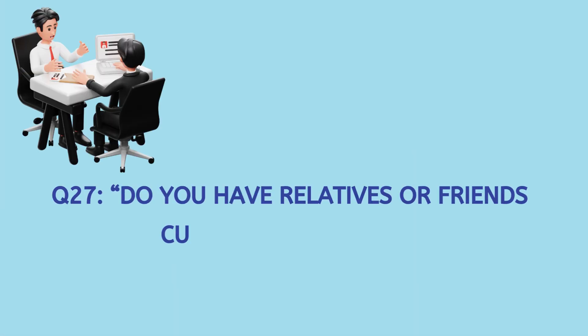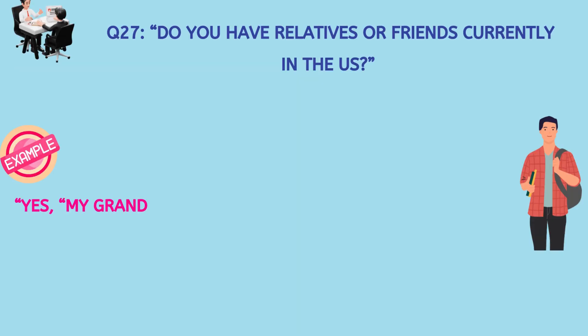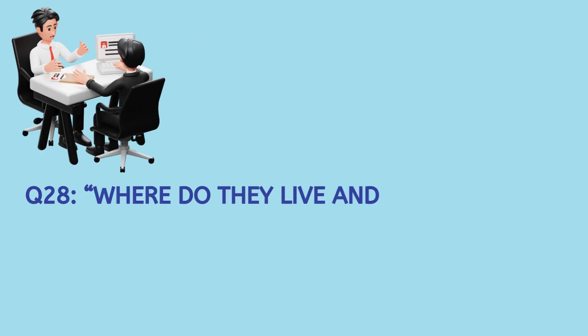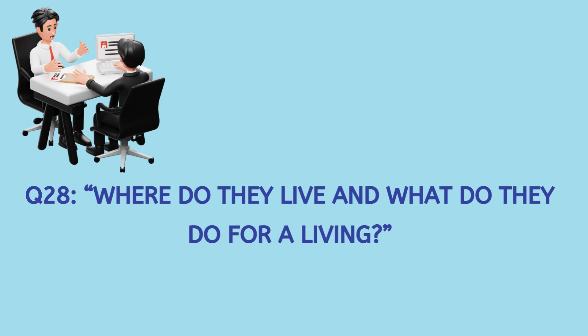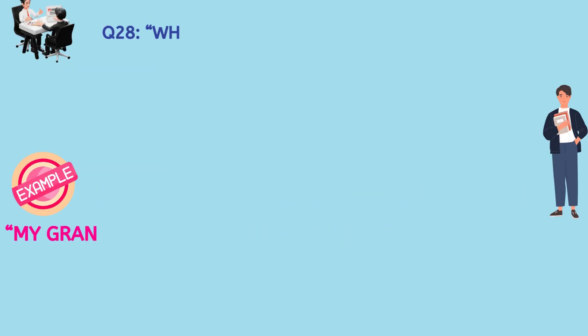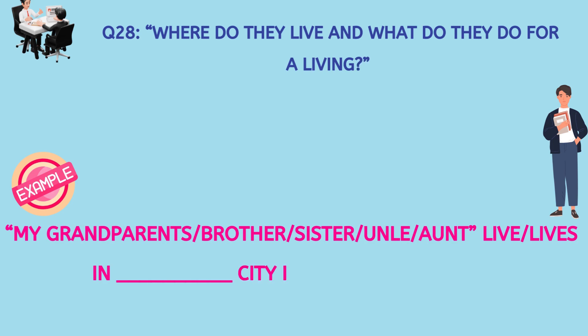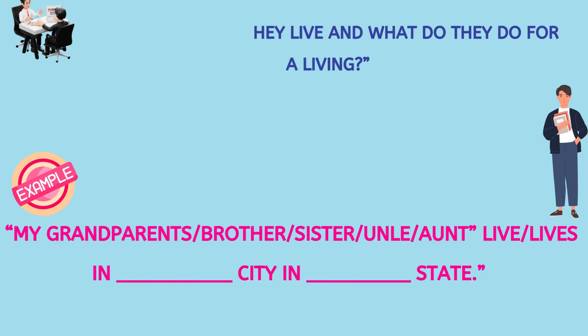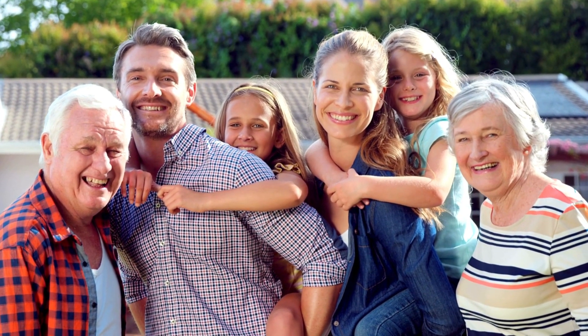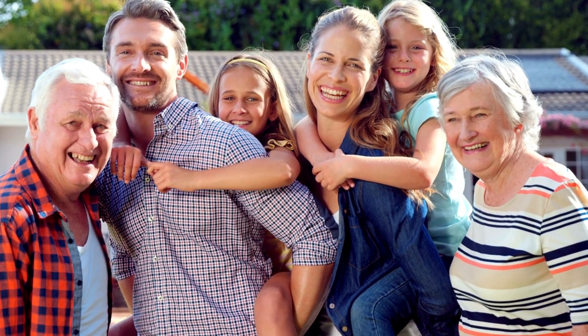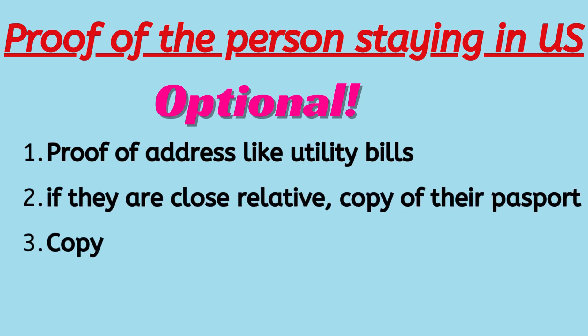Then the counsellor officer might ask: do you have any relatives or friends currently in the United States? Please say yes if you have and no if you don't. They would also like to know, if you have family in the United States, where do they live and what do they do for a living? You could answer by saying: 'My grandparents or my brother or my sister live in this city.' Make sure you have a clear understanding about what job they do, what is their source of income, how much is their income, and try to carry certified copies of their tax returns and maybe a few bank statements.